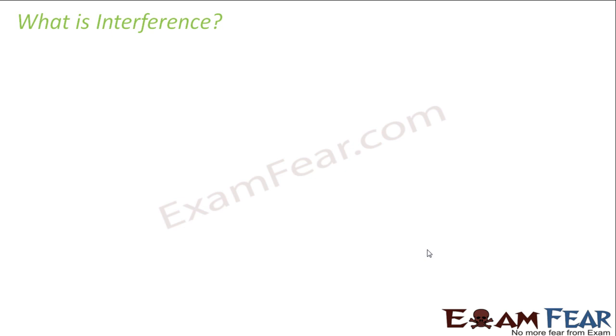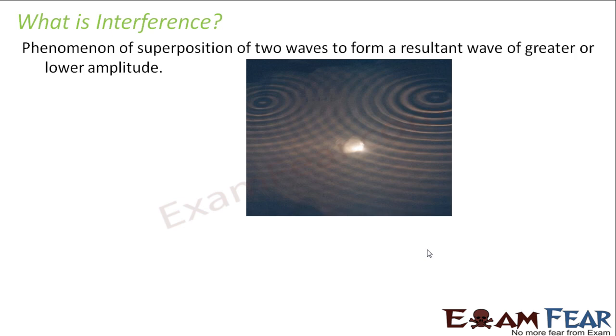So when the sources are placed very close by, the interference pattern becomes more evident. So how do we define interference? It is the phenomenon of superposition of two waves to form a resultant wave of greater or lower amplitude.